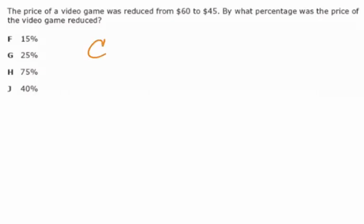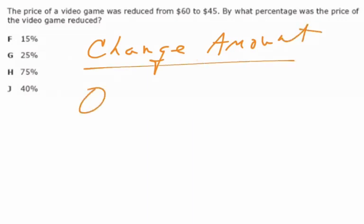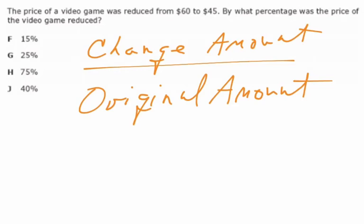And of course you need the change in amount, which we did have there, 60 to 45, and we put that over the original amount. And you didn't have this information during the test, but this is something we really want to lock into our heads and try to memorize because it's not on a formula chart. We need to know this. This little formula, change in amount over original amount, will get you percent change.